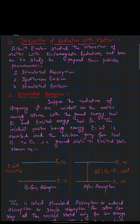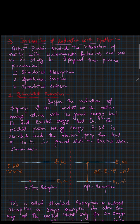Let's talk about stimulated absorption first. We suppose that radiations of frequency are incident on matter having a ground energy level E1 and excited energy level E2. The incident photon having energy equal to h-nu is absorbed. Before absorption, electrons are present in the ground state — which is always a stable state — and after absorption, the electron jumps to the excited state E2. The number of atoms in the excited state is N2 and in the ground state is N1.